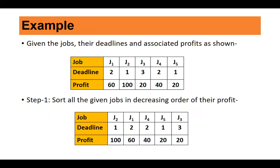Now let's look at a concrete example. We have jobs J1 to J5. J1 must be completed within 2 hours with a profit of 60. J2 within 1 hour with a profit of 100. J3 within 3 hours with a profit of 20. J4 within 2 hours with a profit of 40. J5 within 1 hour with a profit of 20. We need to schedule these jobs to get the maximum profit.